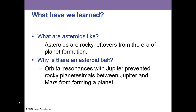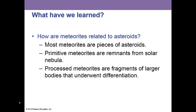What did we learn? Asteroids are rocky leftovers from the era of planet formation, and there is an asteroid belt due to Jupiter's orbital resonances. Most meteorites are pieces of asteroids. Primitive meteorites are a record of the solar nebula, and processed meteorites are fragments of larger bodies that underwent differentiation.